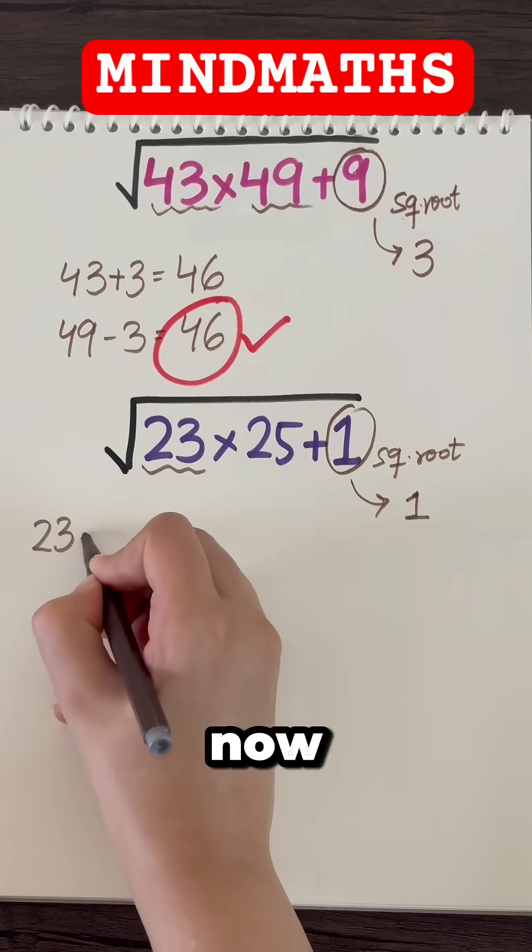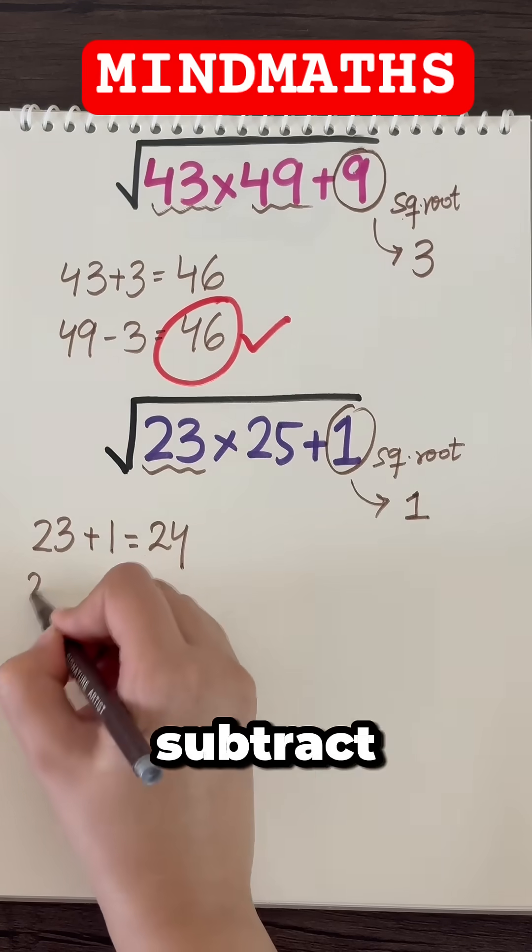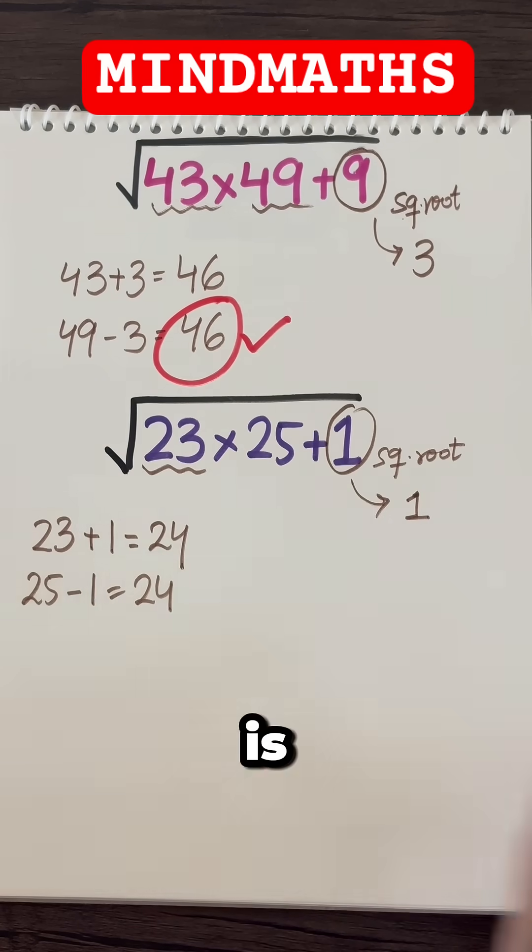Squaring 1, we got 1. Now either add it in 23 or subtract it from 25, the choice is yours.